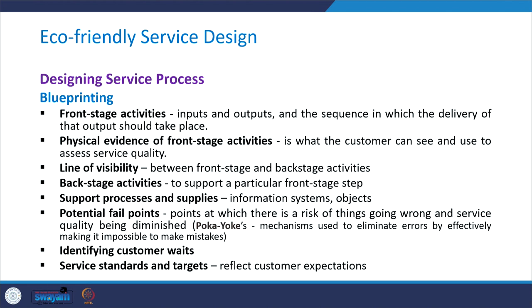A blueprint entails several elements. First are front stage activities, which involve inputs, outputs, and the sequence of delivery. Second is physical evidence of front stage activities — what the customer can see and use to assess service quality. Third is the line of visibility between front stage and backstage activities. Backstage activities support a particular front stage step. There are also support processes and supplies such as information systems. Blueprinting also identifies potential fail points — points where there is a risk of things going wrong and service quality being compromised.